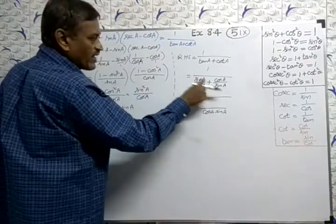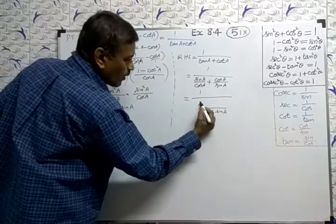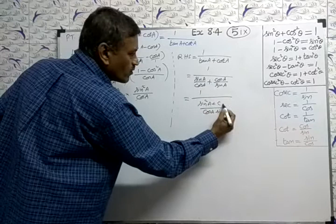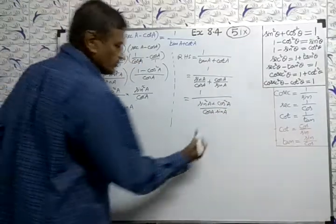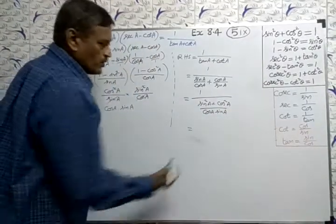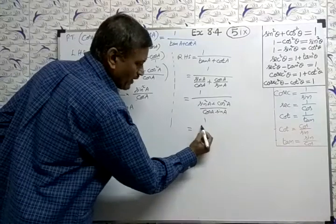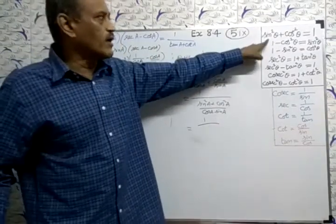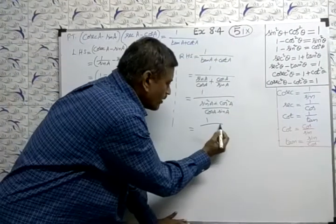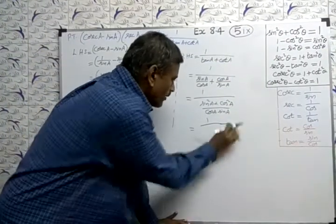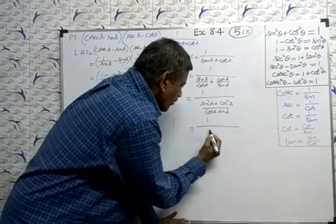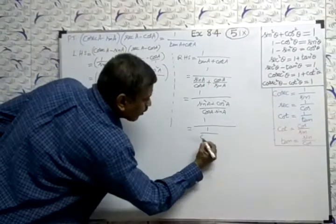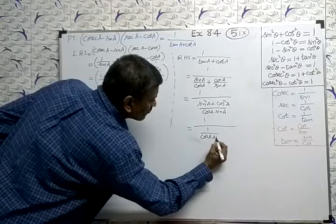Cross multiply sin into sin, sin square. Cos into cos, cos square. So, equal. What is this? 1 by sin square plus cos square equal to what formula? 1. 1 by 1 into 1 by 1 by here, cos A sin A.